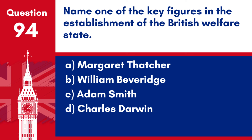Question 94. Name one of the key figures in the establishment of the British welfare state. a. Margaret Thatcher. b. William Beveridge. c. Adam Smith. d. Charles Darwin.